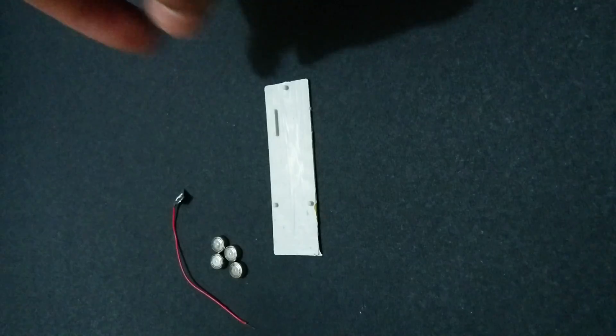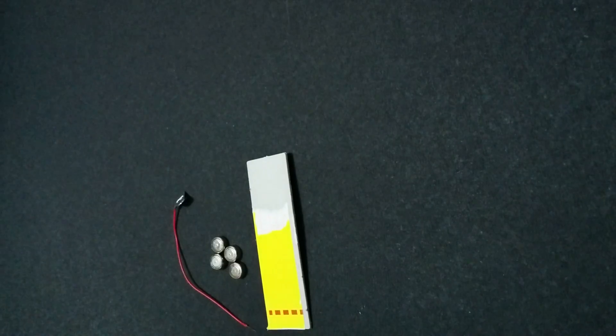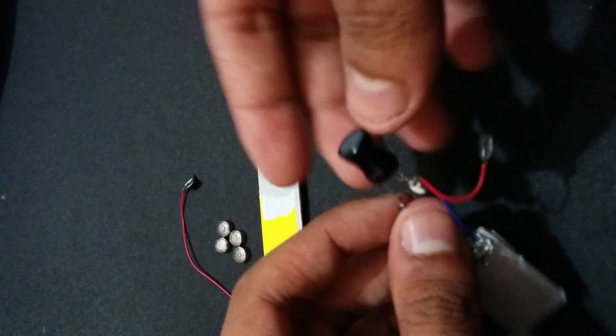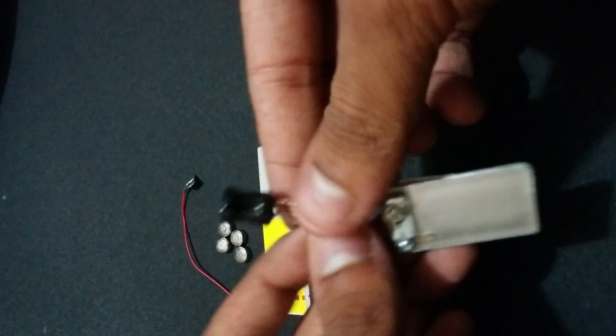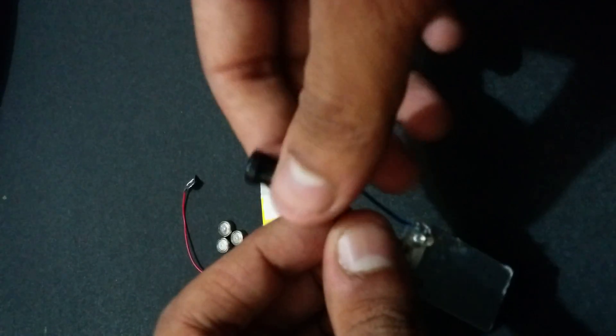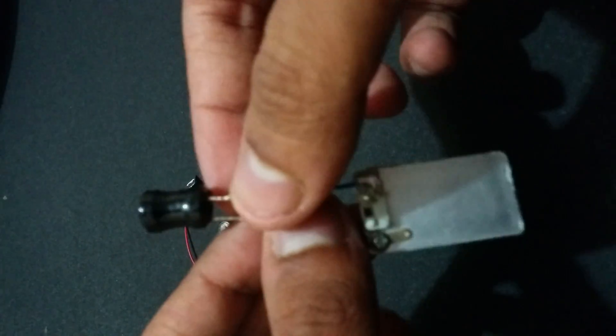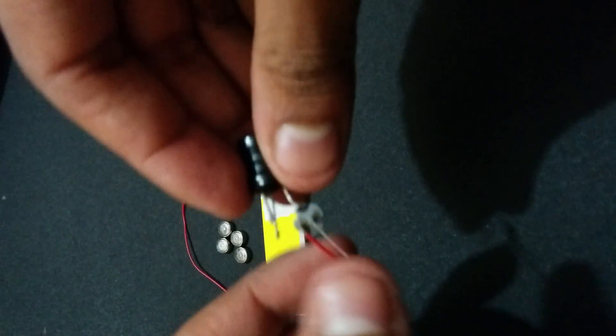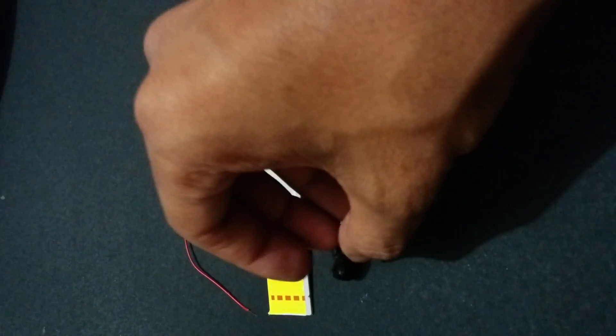Third thing is this covering which was holding the whole packet. Fourth thing is this capacitor. This is the capacitor which holds the whole charge and gives you the shock. This is the main game. So we'll disconnect this one also from the circuit.